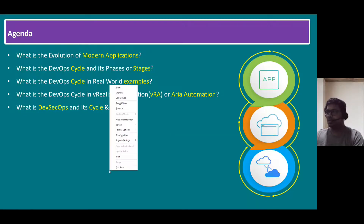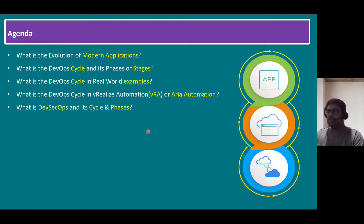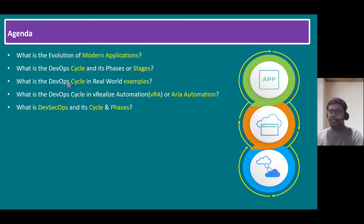Hi everyone. Welcome to the Non-Cloud Garage. In this session, I'm going to talk about the DevOps lifecycle and also DevSecOps. Before we start the DevOps cycle, we have to quickly recap the evolution of modern applications — what it is, the DevOps cycle and its phases, real-world scenarios with examples, the tools used, DevOps in vRealize/ARIA Automation, and finally DevSecOps. Once we're familiar with the DevOps cycle, DevSecOps is just an add-on with security.